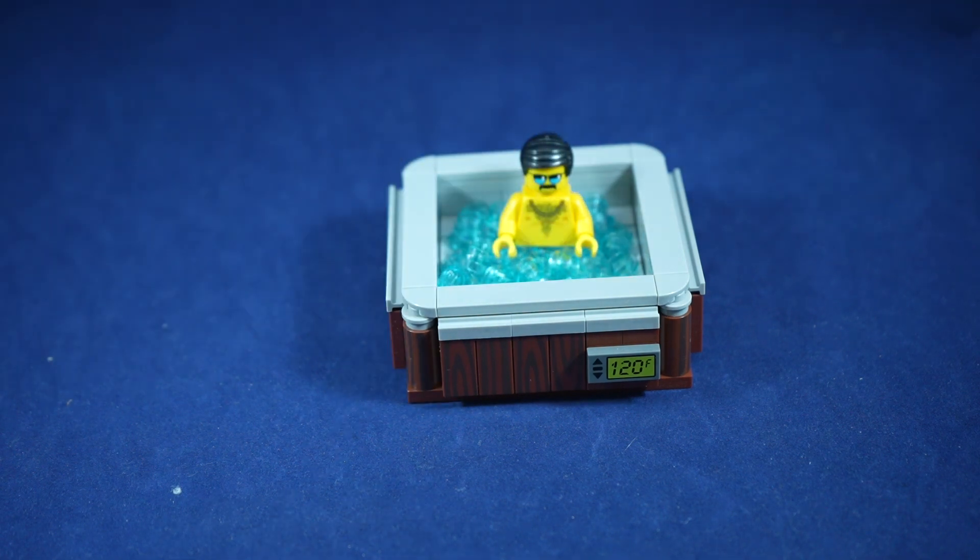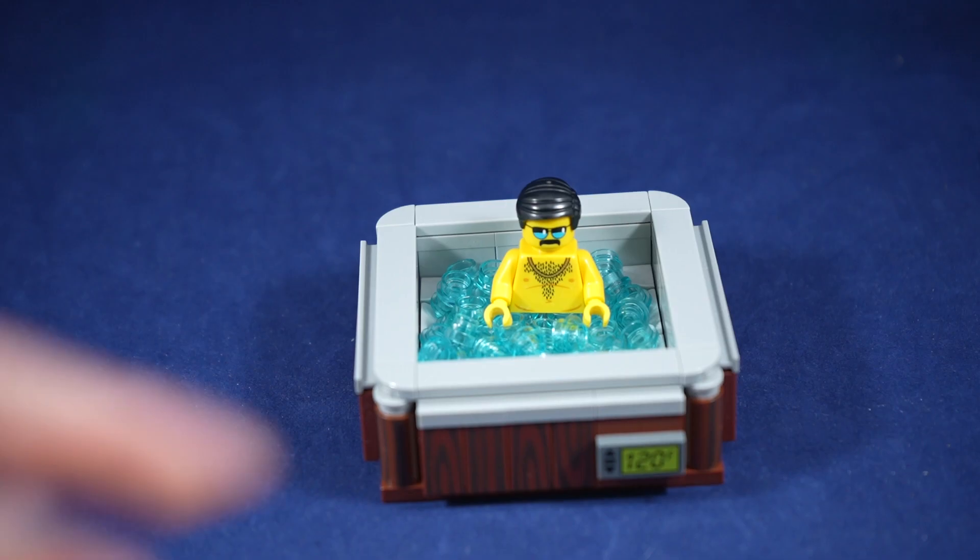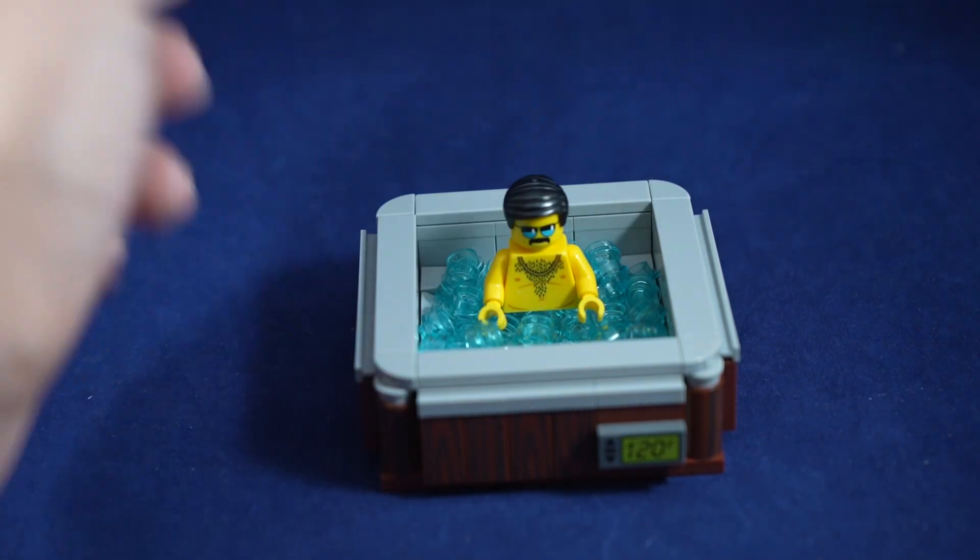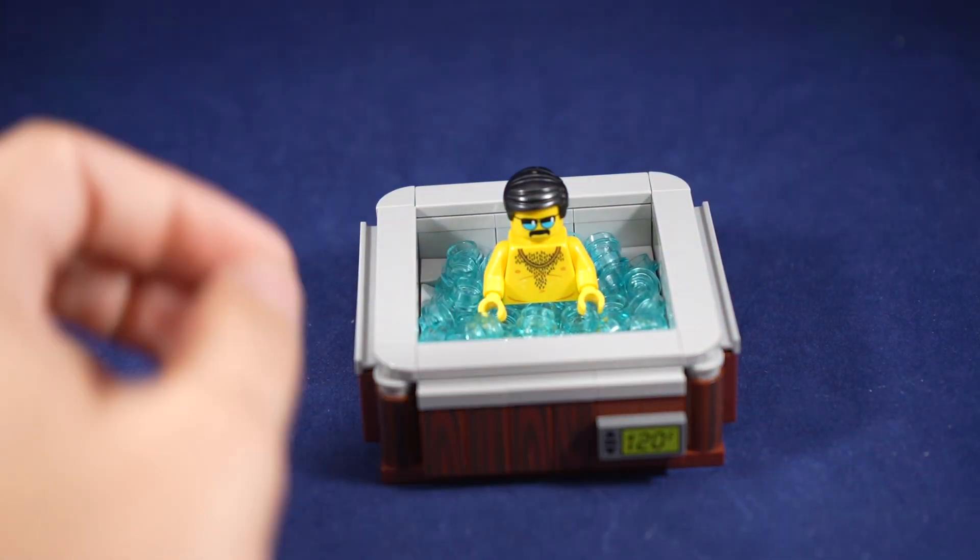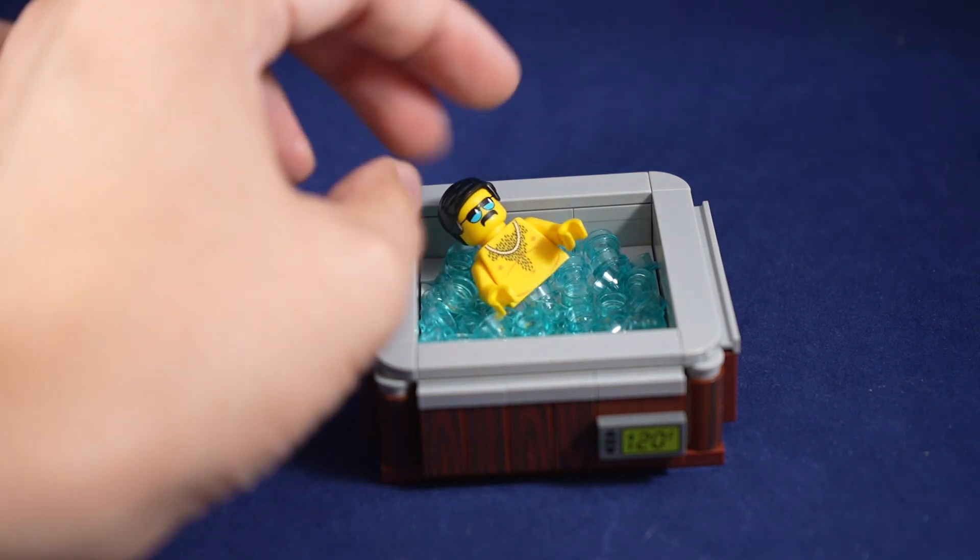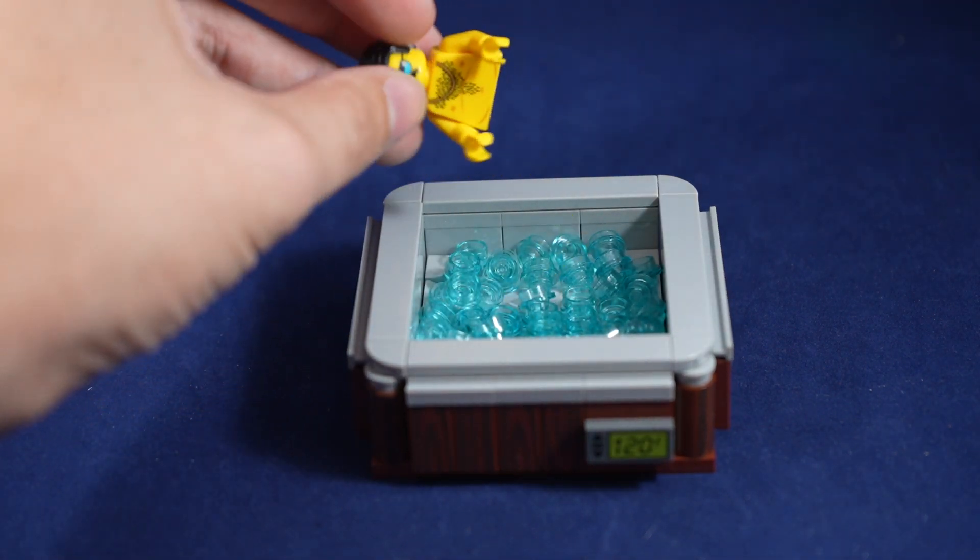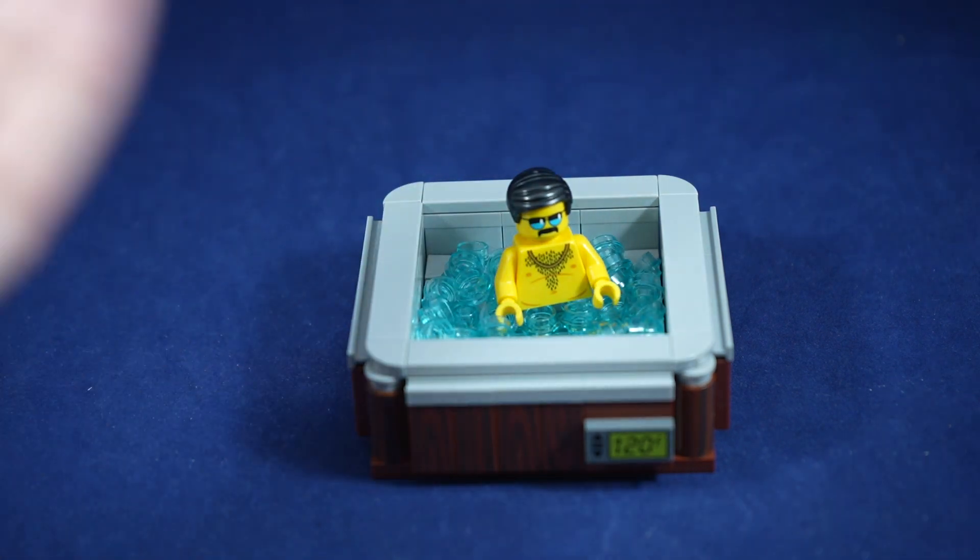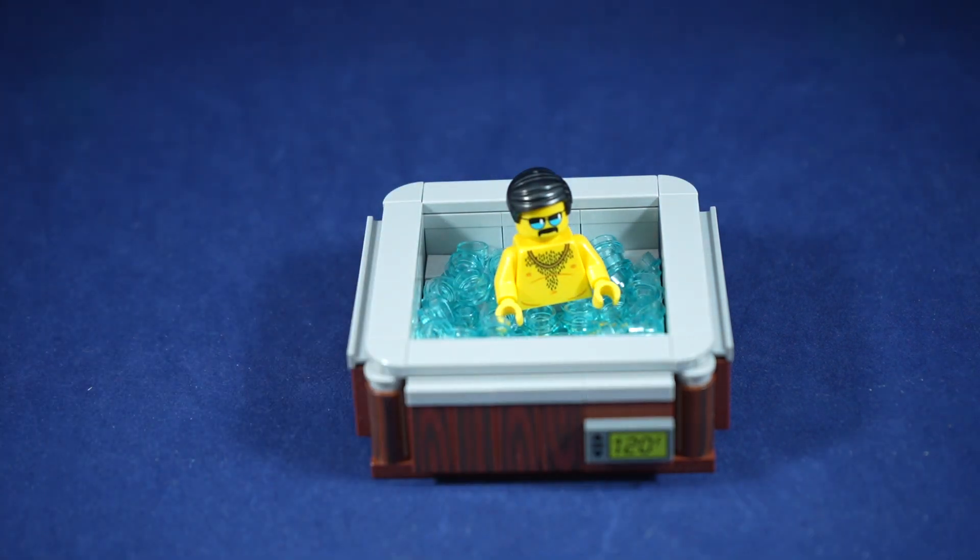And then you just put the torso on the top there. Pretty nice effect. You know it was a pretty shallow build so it's not like the minifigure is really going to be drowning in there. But you know what works. It is kind of goofy to get half a figure though no legs. So that is an interesting choice. I can see why they would do it but doesn't make 100% sense to me.